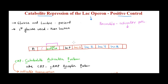Even in the absence of the activator protein, there will be some transcription if nothing blocks RNA polymerase, but transcription levels will be really low. Activator proteins increase the affinity of RNA polymerase for the promoter so that it can firmly bind and greatly enhance the level of transcription — producing lots of mRNA and enzyme. Without the activator protein, RNA polymerase would still bind and transcribe, but the level of transcription is very, very low.